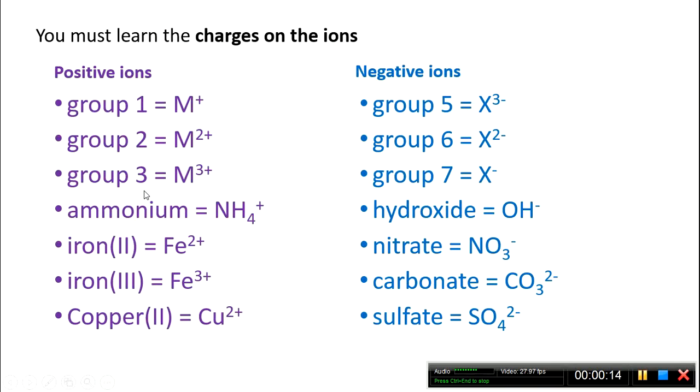Group 1, 2, and 3 ions all form positive ions with a charge relative to their group. So, group 1 is 1+, group 2 is 2+, and group 3 is 3+.